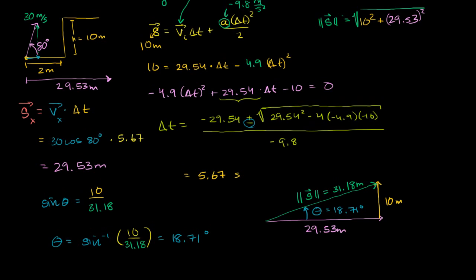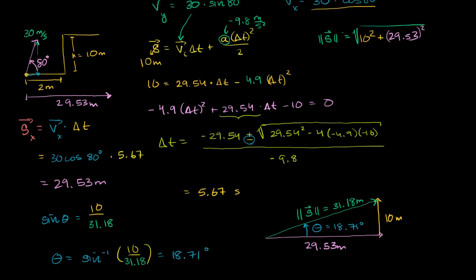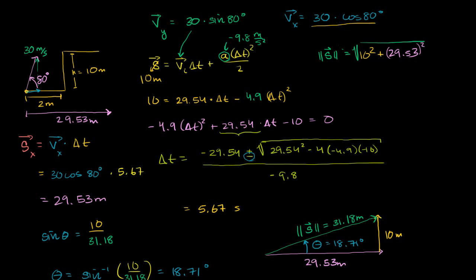This projectile's total displacement is 31.18 meters at 18.71 degrees above the horizontal. Its path will look something like this. Now, I originally asked how far along the platform it lands. We figured out the total horizontal displacement is 29.53 meters. Since the platform starts 2 meters to the right, the projectile lands 27.53 meters along the platform.